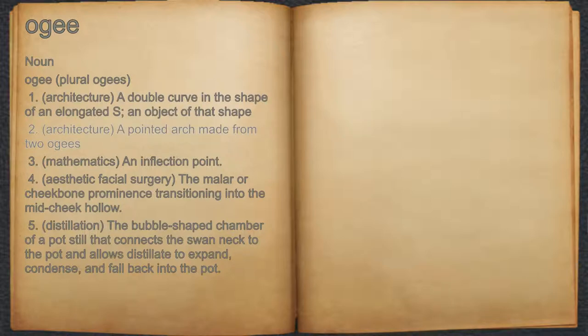2. Architecture: a pointed arch made from two O.Gs. 3. Mathematics: an inflection point.